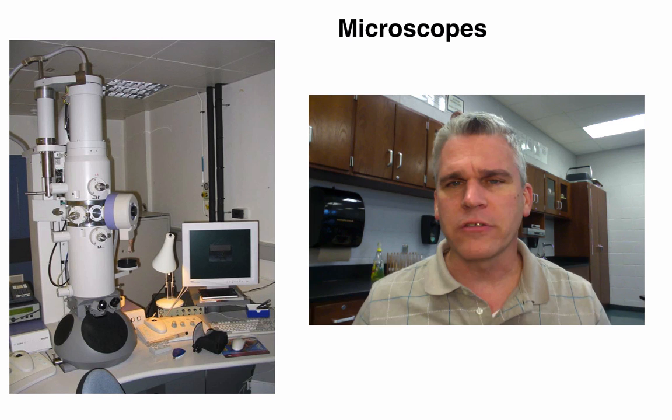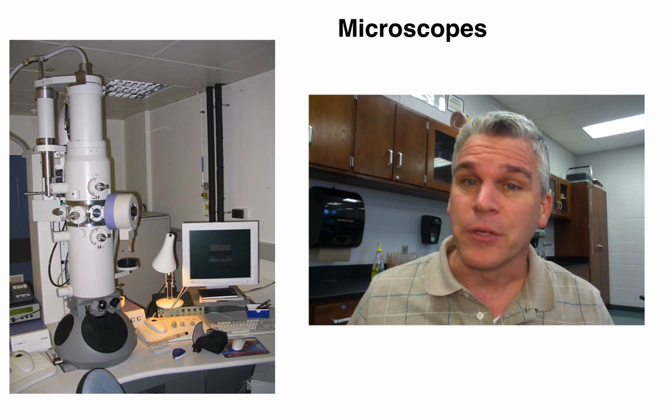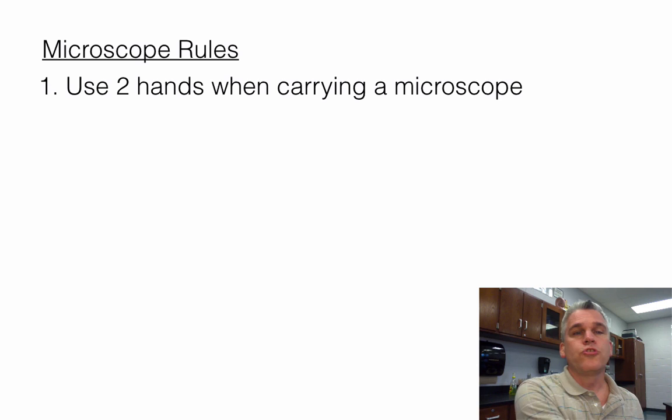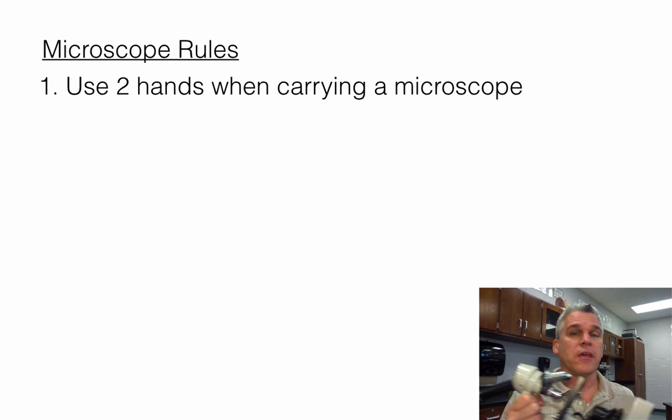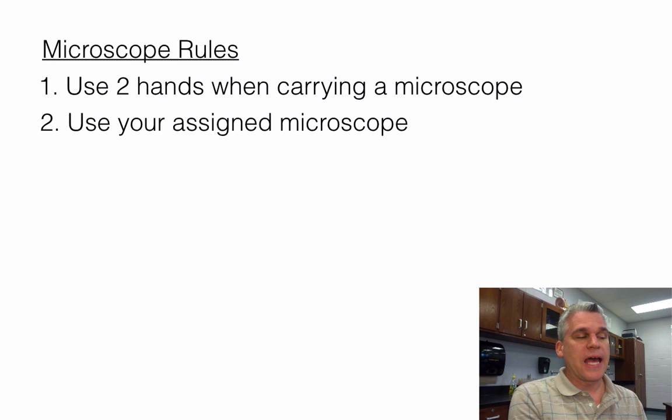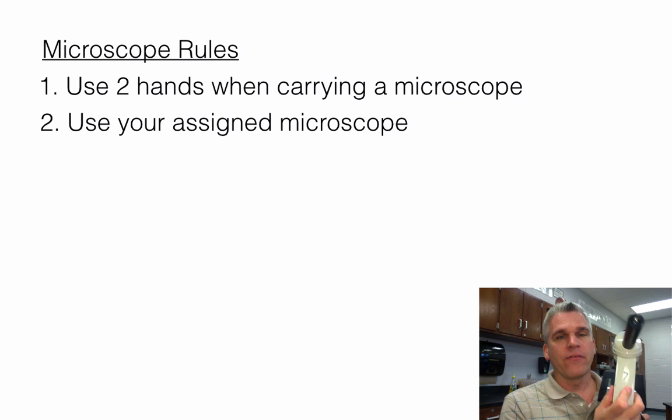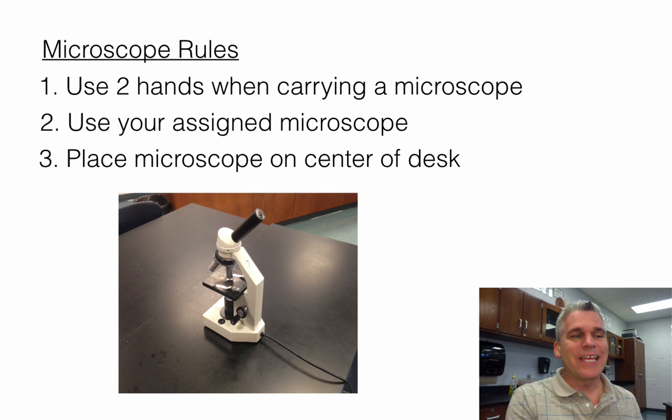So let's go over some of the rules. Always use two hands when carrying the microscope — one on the arm and the other on the base. These are expensive pieces of equipment; we don't want to be swinging them around with just one hand. Use your assigned microscope — all microscopes are given a number and that's the one you'll always use. Place your microscope on the center of the desk to prevent it from falling if you accidentally trip on the cord.